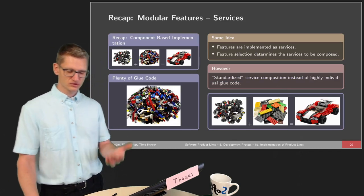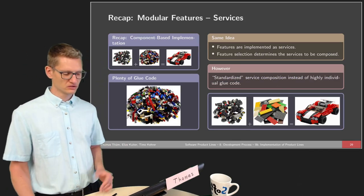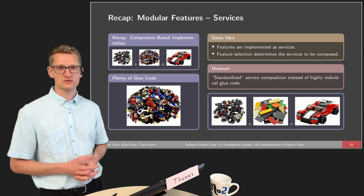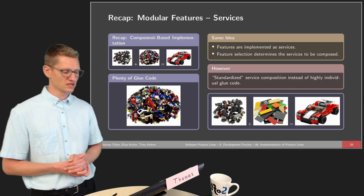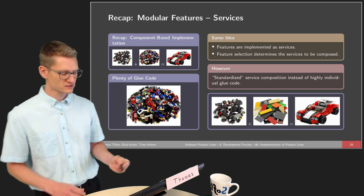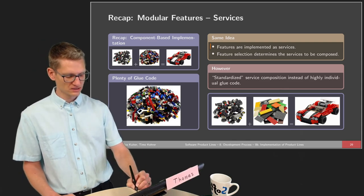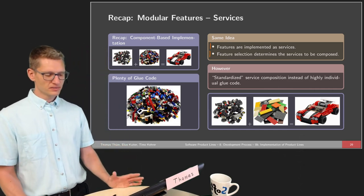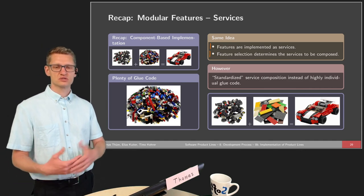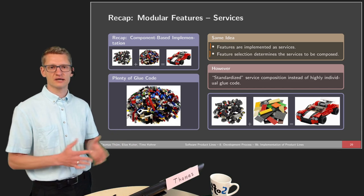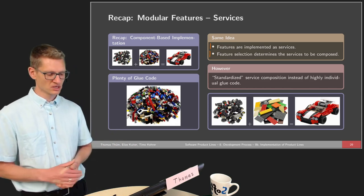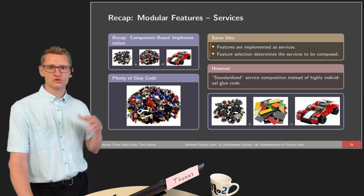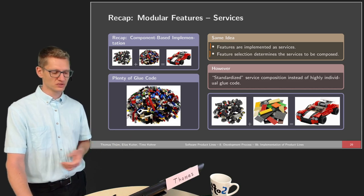We also talked about services. For services it is a bit different because we are not providing glue code, but the idea is very similar: we implement features as services, not as components. Feature selection determines the services to be composed. It is a bit more structured than components because service composition is more standardized rather than highly individual glue code. But still there is a lot of effort during application engineering to connect all those services and build these systems, and it will not be applicable if we have millions of different configurations.